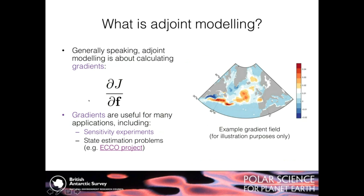Gradients like this are useful for many things, including sensitivity experiments, which is the focus of this talk. You can also use adjoints to estimate the state of the ocean — the ECHO project mentioned on the last slide is an example. A long list of state estimates has been generated using MITGCM's adjoint modeling capability.